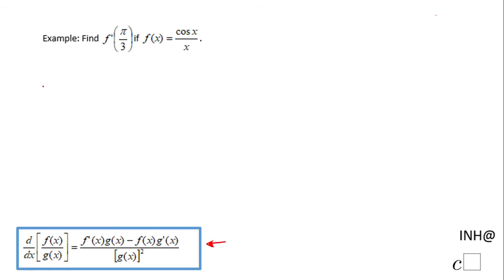You see the quotient rule down here to find f prime of x. If you notice here on the first part of the quotient rule, we have f prime which is in this case the numerator. So we're going to do the derivative of the numerator, in our case cosine of x, times the denominator x.